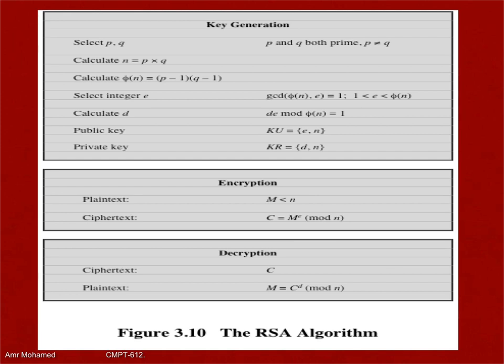D is selected such that it is the multiplicative inverse of E modulo the totient of N. All of this is based on the fact that the totient of N is very hard to calculate, because the torsion of N itself requires knowing P and Q, which requires factorizing N.